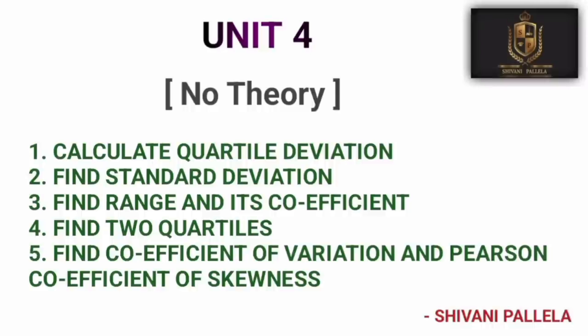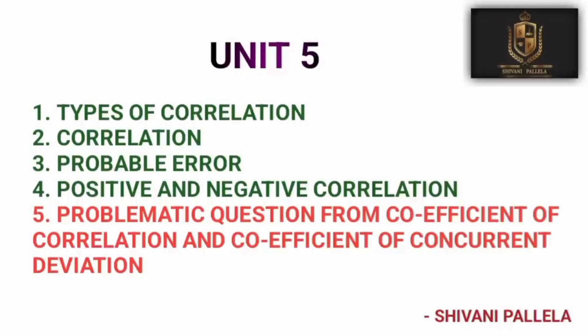In Unit 4, there is no theory for Part A — short or long. Problematic questions will come from Quartiles, Coefficient of Variation, Coefficient of Skewness, and Standard Deviation. There is a good chance of these questions appearing. Coming to Unit 5, 'Types of Correlation' and 'What is Correlation' are the most important theory questions in Part A. There's also a chance of a problematic question from Coefficient of Correlation or Concurrent Deviation. Definitely one problematic question from Unit 5 will appear. This covers what you need to know for Part A.